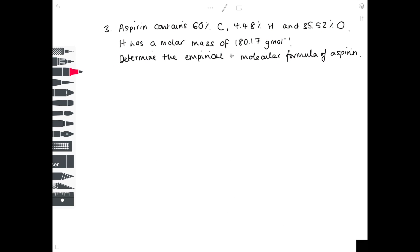In question 3, we're going to be bringing in molecular formulae calculations, which is good because you need to look at a variety of questions. But as you can see from the beginning of the question, it's still a very ordinary empirical formulae question. So aspirin contains 60% carbon, 4.48% hydrogen, and 35.52% oxygen. It has a molar mass of 180.17 grams per mole. Determine the empirical and molecular formula of aspirin.